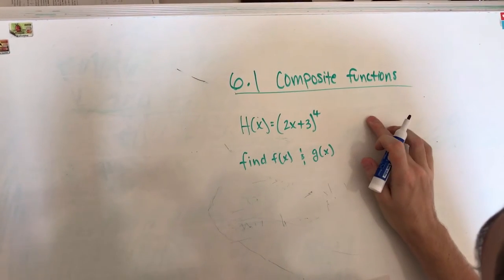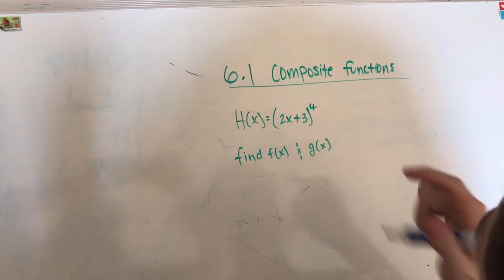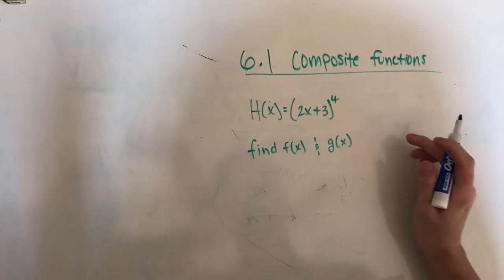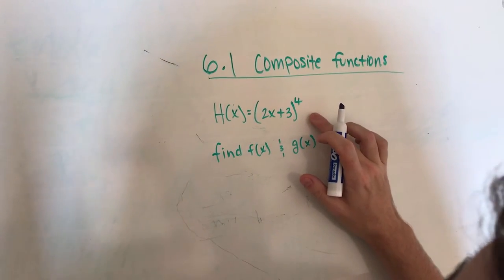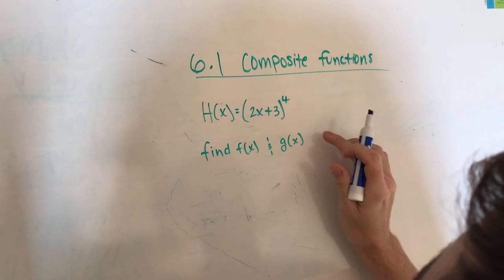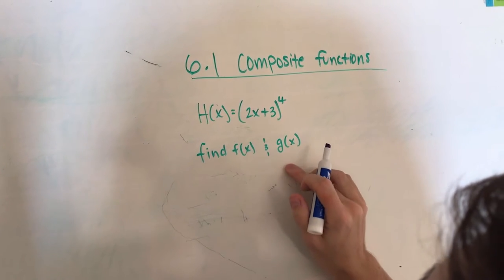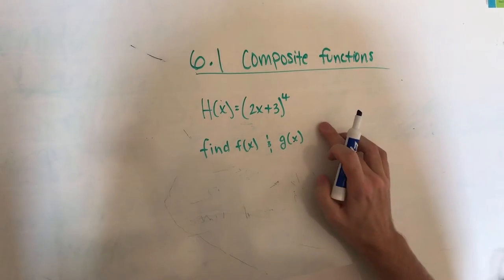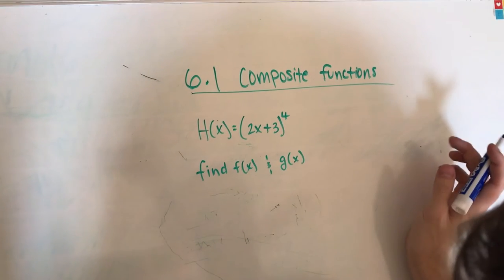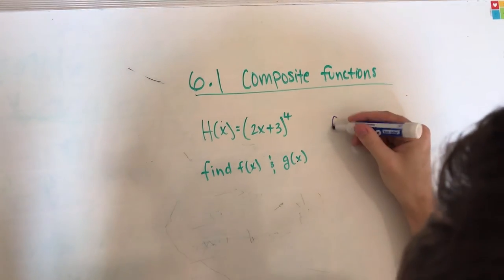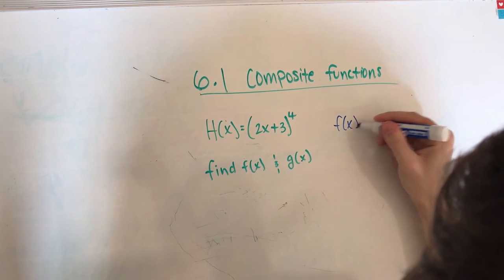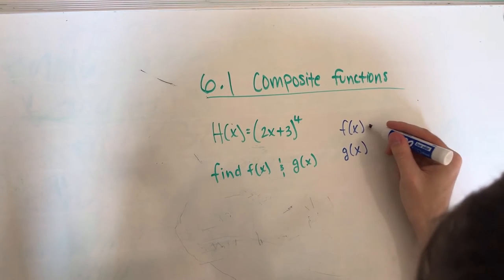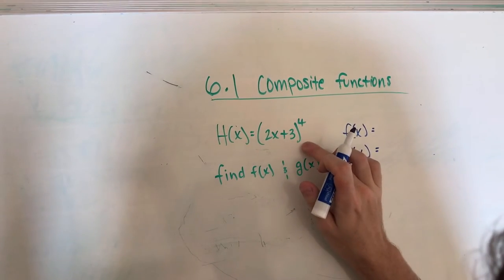This is 6.1 composite functions. I remember learning this in class — it was a pretty easy chapter. Basically, this is the problem from the review, and essentially all we're trying to do is find f of x and g of x. The basic way to do that, according to the notes in class and the book together, is you're just going to write out your f of x and your g of x off to the side, because that's what you're trying to find. The easiest way is to just split this up.